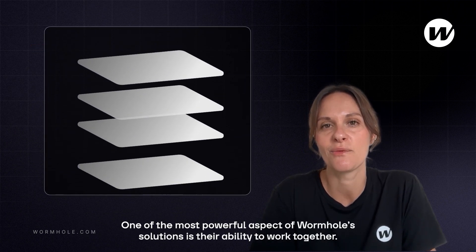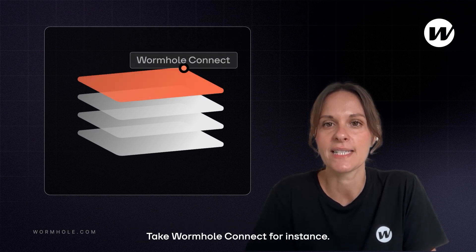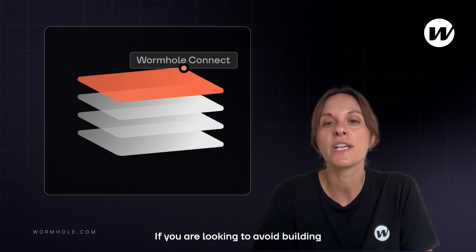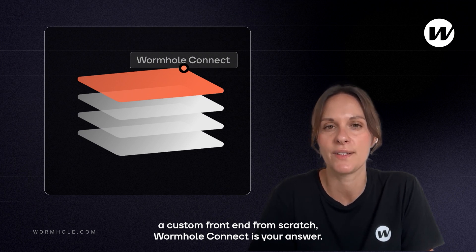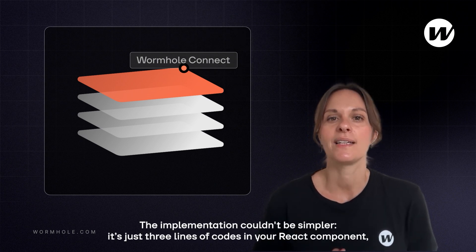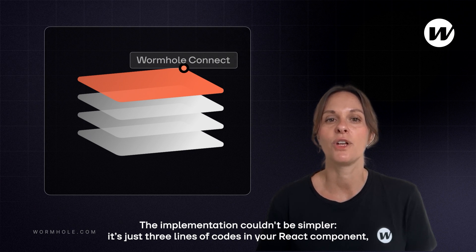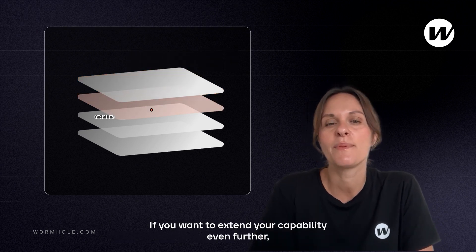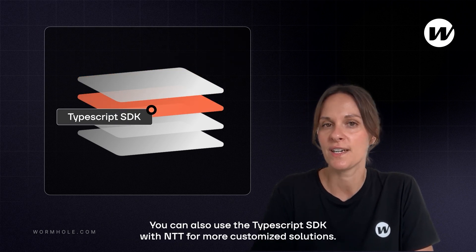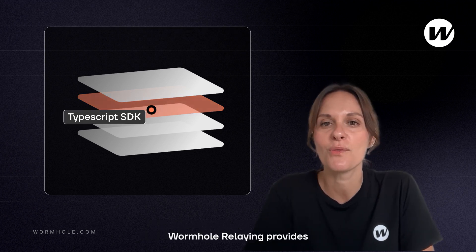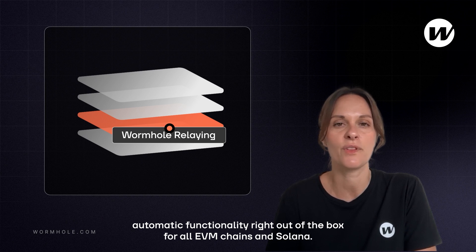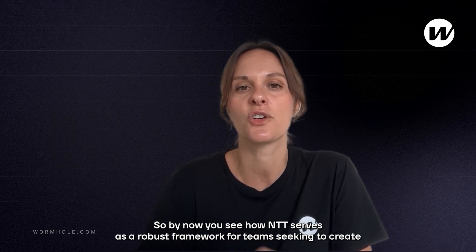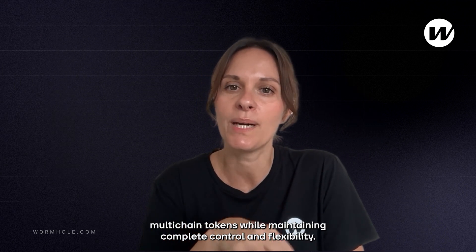One of the most powerful aspects of Wormhole's solution is the ability for products to work together. Take Wormhole Connect, for instance — it's a React widget that is frequently paired with NTT integrations. If you are looking to avoid building a custom front end from scratch, Wormhole Connect is your answer. The implementation couldn't be simpler: it's just three lines of code in your React component followed by a quick config file that you update based on your NTT deployment JSON. You can also use the TypeScript SDK with NTT for more customized solutions. Wormhole Relayer provides automatic functionality right out of the box for all EVM chains and Solana.